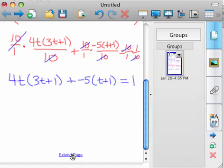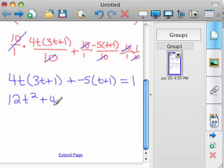Now it's just solved however it needs to be solved, so the first thing I'd do here is distribute. So you'd have 12t squared plus 4t minus 5t minus 5 equals 1.